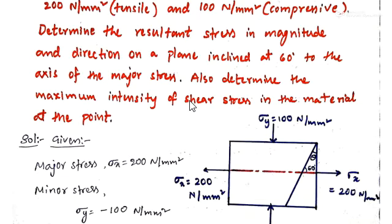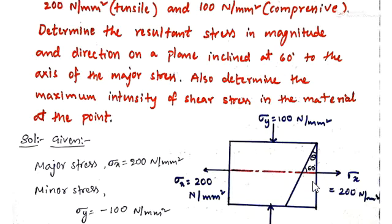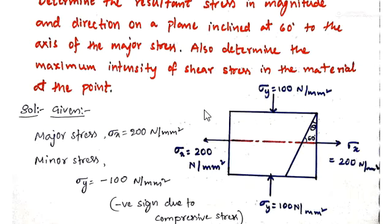Our aim is to find out the resultant magnitude of the resultant stress on the oblique plane. To get the magnitude of the resultant stress, first we have to find out the values of normal and shear stresses on the oblique plane. From those we can find the magnitude of the resultant stress, the direction of the resultant, and after that the maximum intensity of shear stress. We have formulas for normal and shear stresses in terms of σx and σy, and we substitute these values into those formulas.